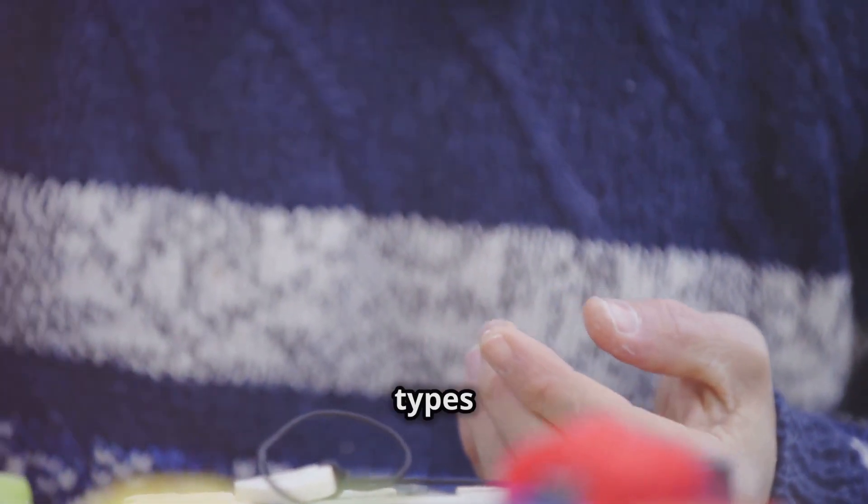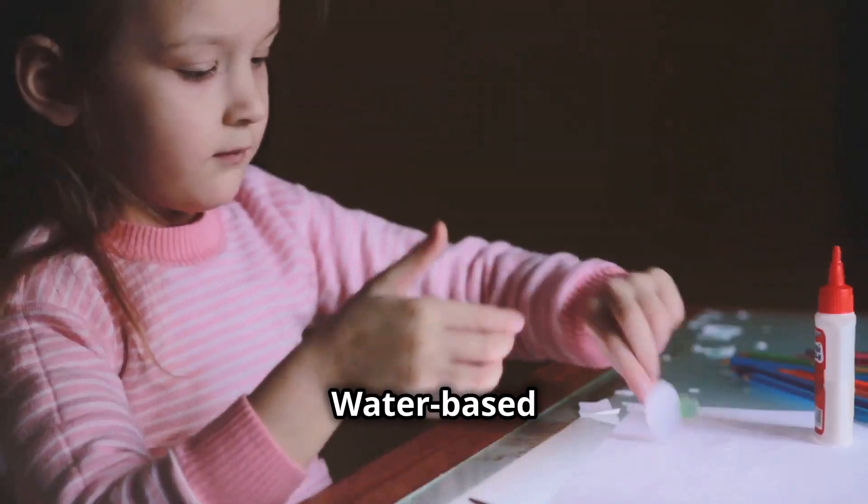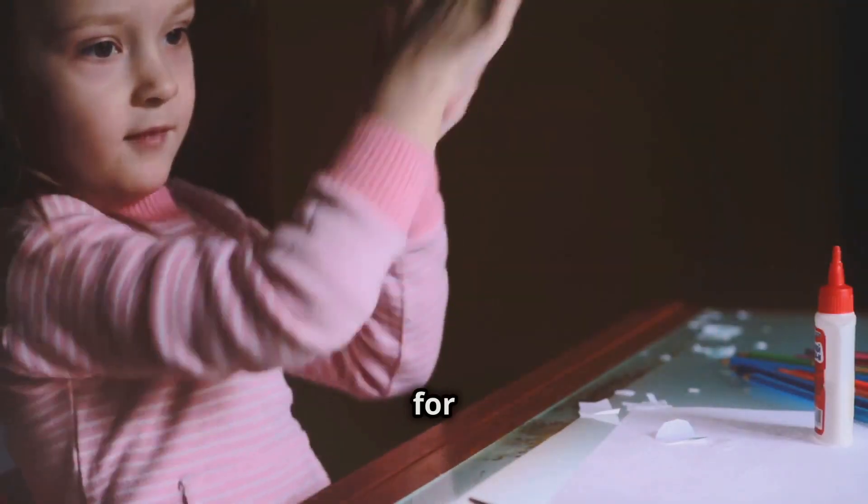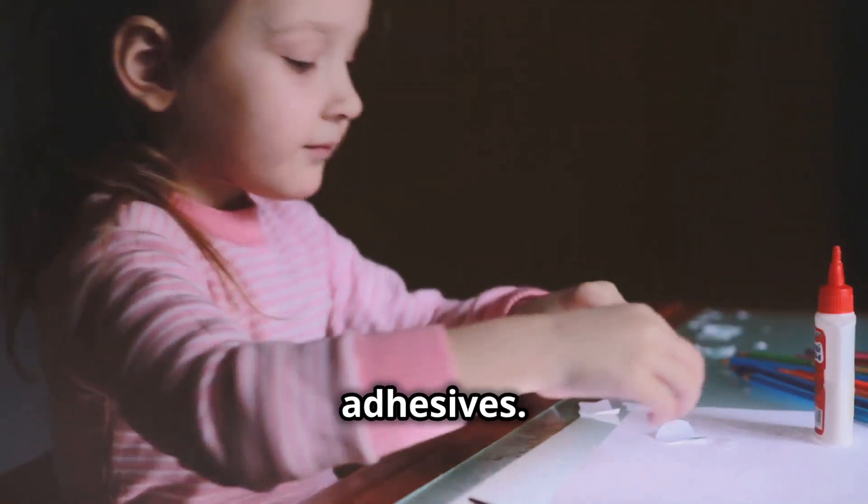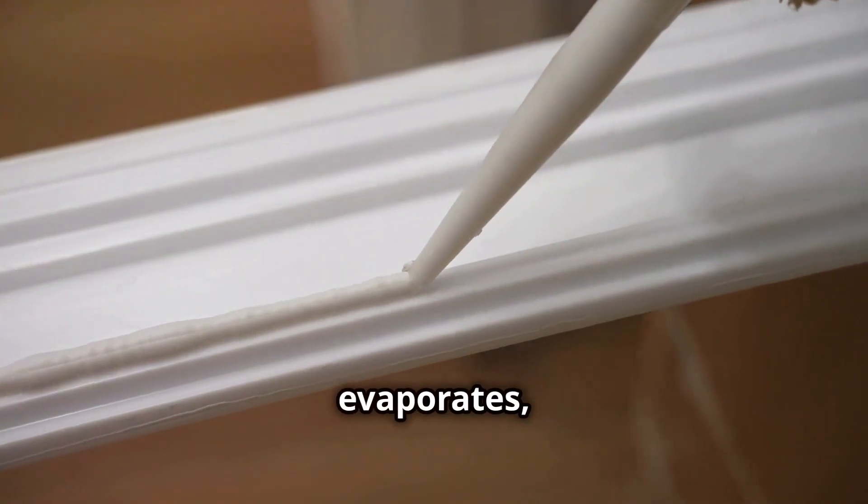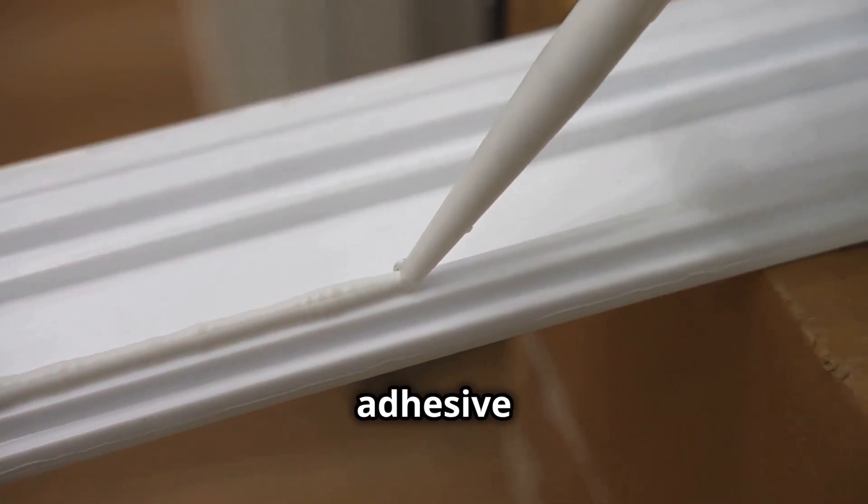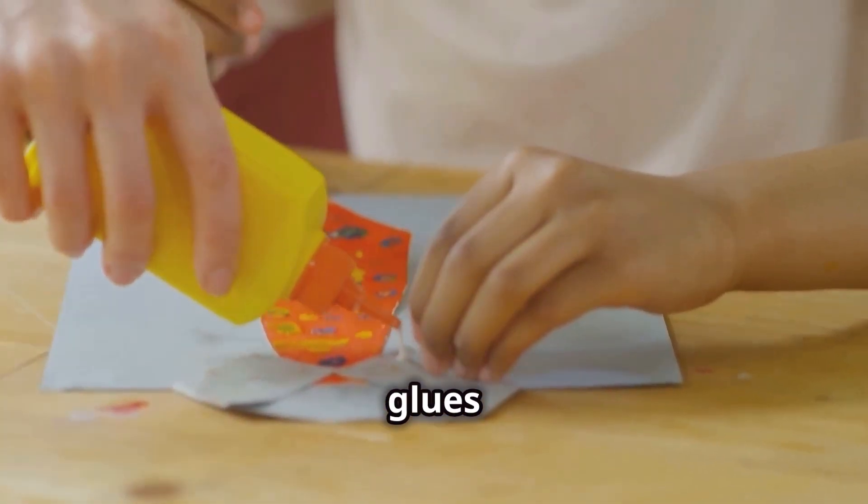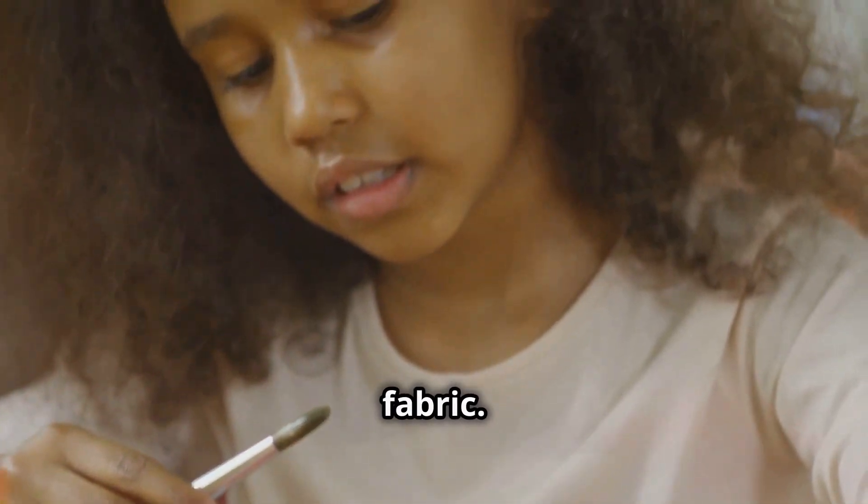Now let's look at the different types of adhesives. Water-based glues, like the ones you use in school or for crafts, are non-reactive adhesives. They dry as the water evaporates, leaving behind a solid adhesive layer. These types of glues are perfect for lightweight materials like paper or fabric.